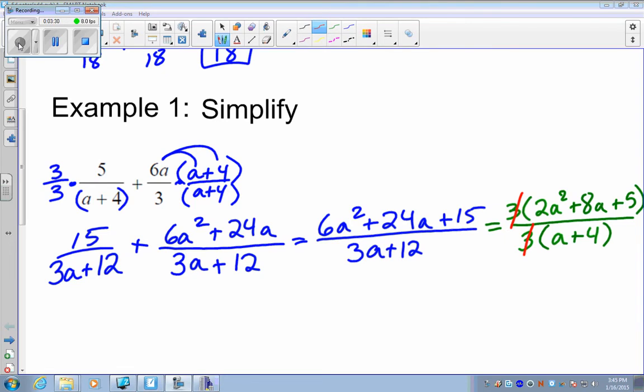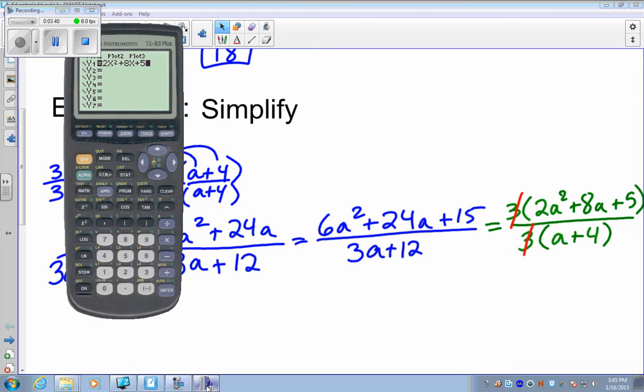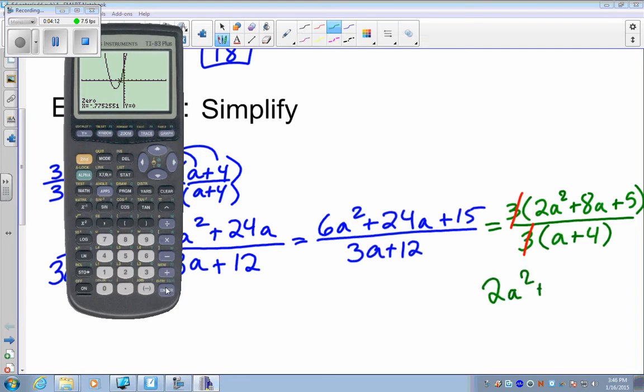We can look to see if we can factor the numerator even more. Maybe we can get an a plus 4. So you put it in the calculator, graph it, get your zero. I'll just check one of them. Enter, right bound, enter, enter. And I get negative .7752551. That's an irrational number. It doesn't repeat. It doesn't end. So therefore, the numerator cannot be factored further. And the final answer is 2a squared plus 8a plus 5 all over a plus 4.